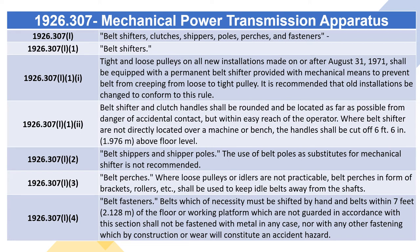1926.307(l)(2) Belt Shippers and Shipper Poles: The use of belt poles as substitutes for mechanical shifters is not recommended. 1926.307(l)(3) Belt Perches: Where loose pulleys or idlers are not practicable, belt perches in the form of brackets, rollers, etc. shall be used to keep idle belts away from the shafts. 1926.307(l)(4) Belt Fasteners: Belts within seven feet of the floor or working platform which are not guarded in accordance with this section shall not be fastened with metal in any case, nor with any other fastening which by construction or use will constitute an accident hazard.